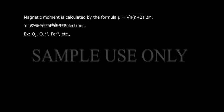Magnetic moment is calculated by the formula μ = √(n(n+2)) BM, where n is the number of unpaired electrons.